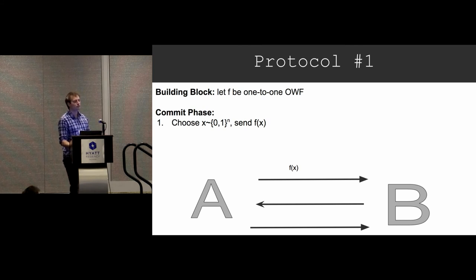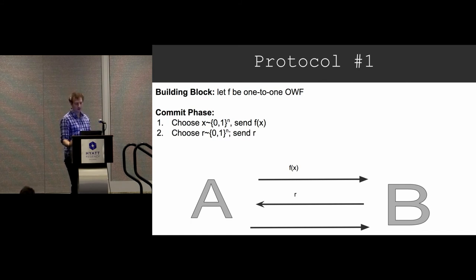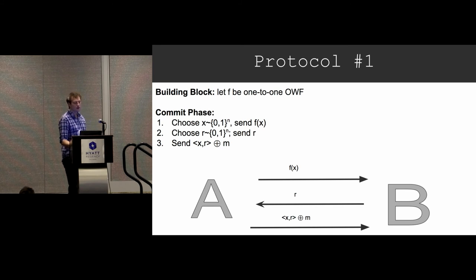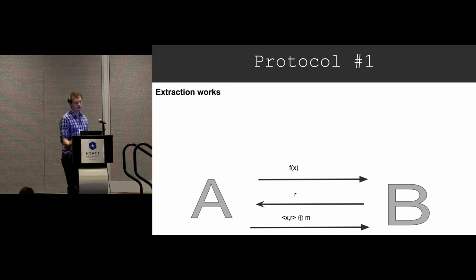Protocol number one is really just an interactive version of Blum's bit commitment — this isn't our actual protocol, but a first try. You send F(X) in the first round. Bob sends R in the second round. And Alice sends the inner product X and R plus the message in the third round.